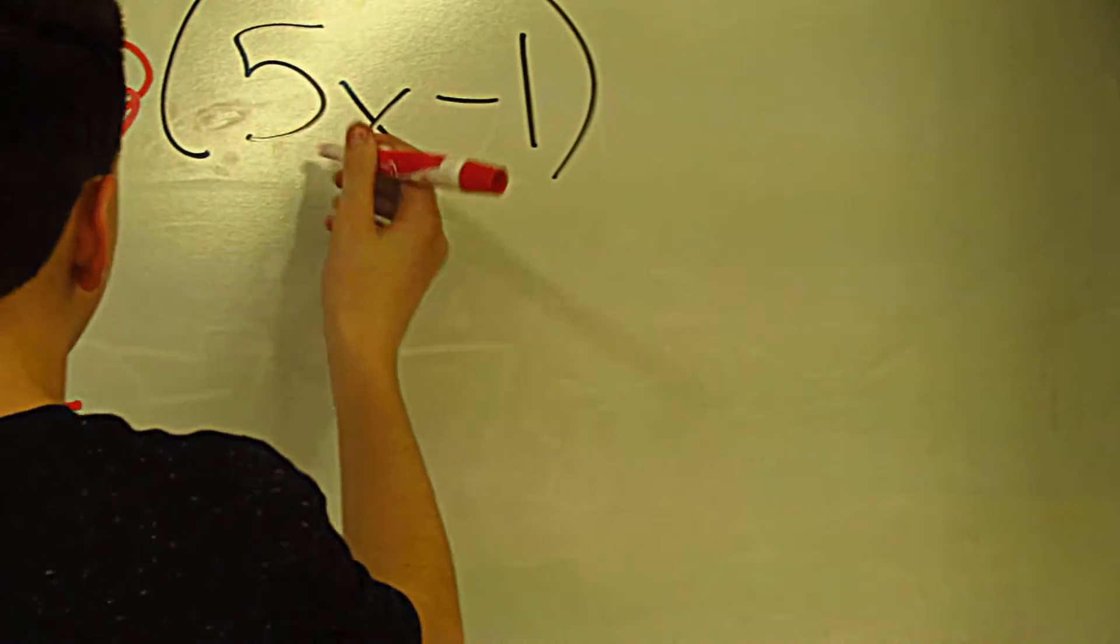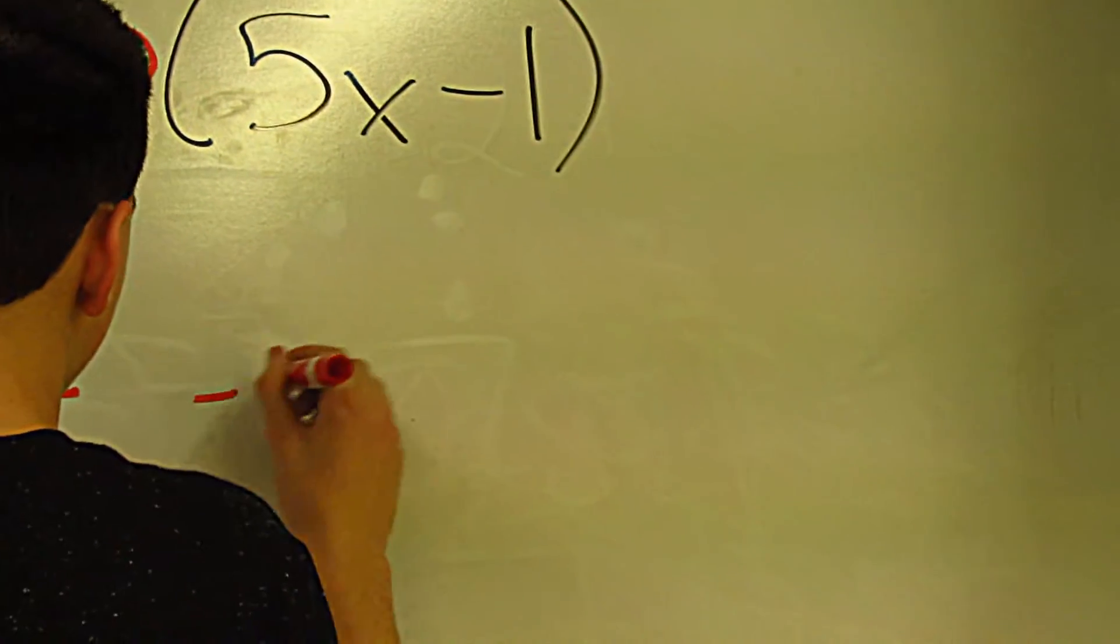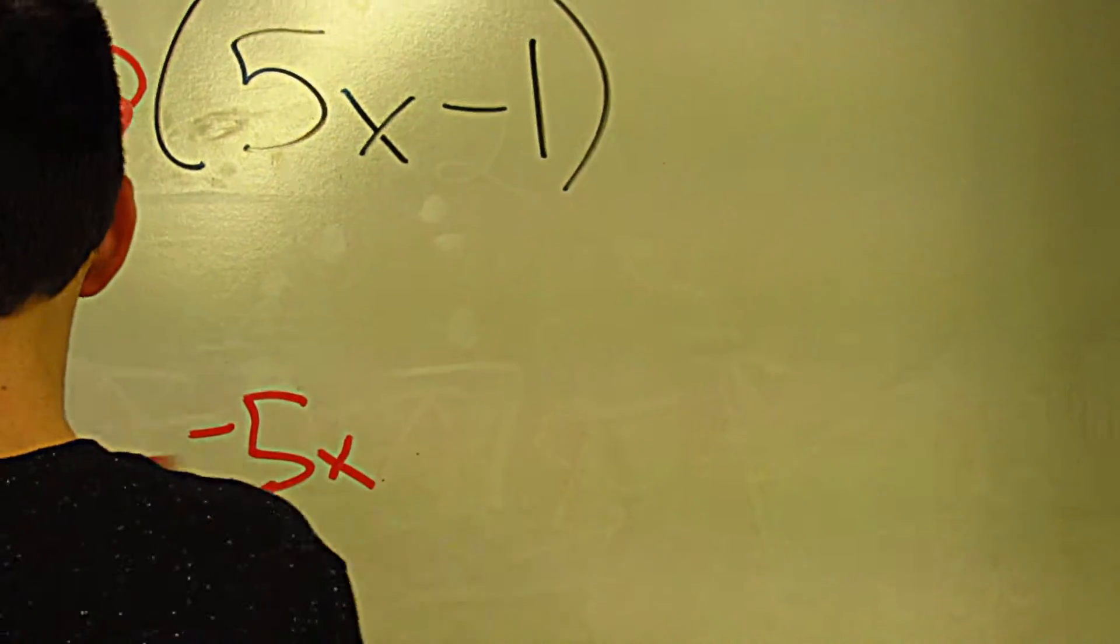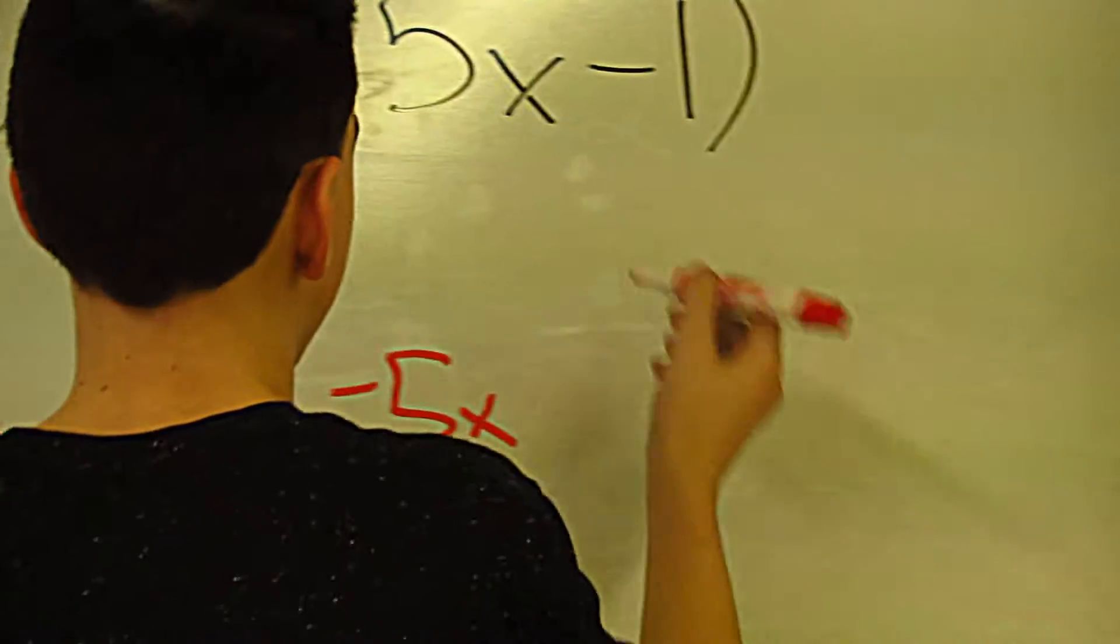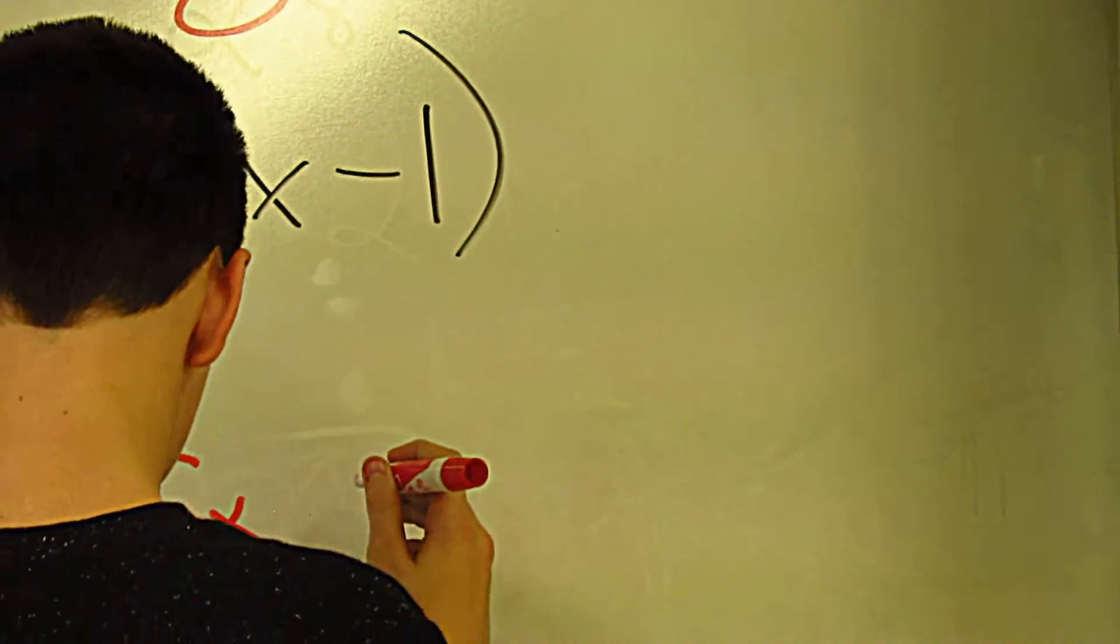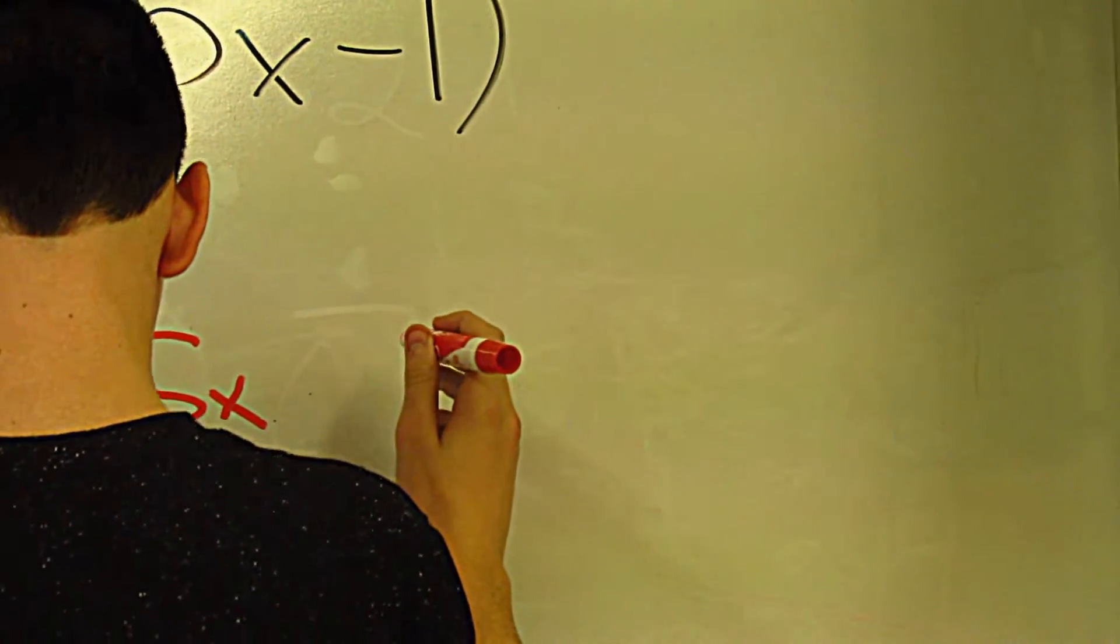It's going to be negative 5x because the opposite of 5 is negative 5x, and negative 1 turns into a positive 1.